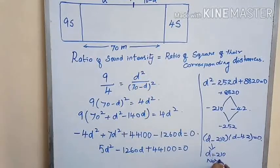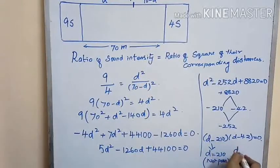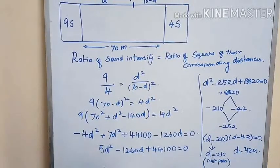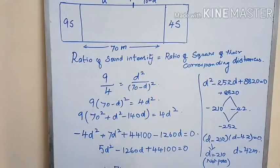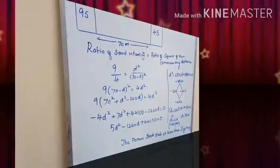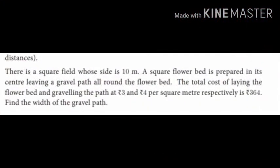d cannot be 210 because the total distance between the two galleries is already given to be 70 meters, so d cannot be more than that. Therefore, the person stands at a distance of 42 meters from the second gallery.